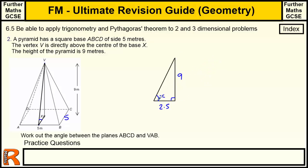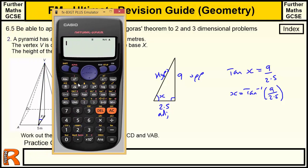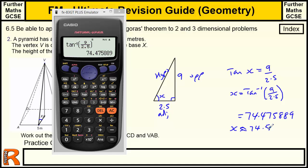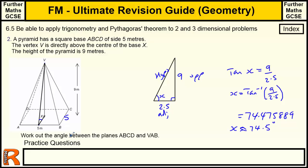So using our SOHCAHTOA rules, this is the opposite, this is the adjacent, this is the hypotenuse. So we're going to use the tan of X equals opposite, which is 9, over adjacent, which is 2.5. So X is going to be tan to the minus 1, 9 over 2.5. So let's bring the calculator in, just type that in, so tan to the minus 1 of 9 over 2.5. And we get 74.475889, or approximately 74.5 degrees. So that's the angle between the planes. So when you're doing planes, what you've really got to do is try to figure out the right angle triangle between the two planes, and then maybe draw that separately, and solve it from there.